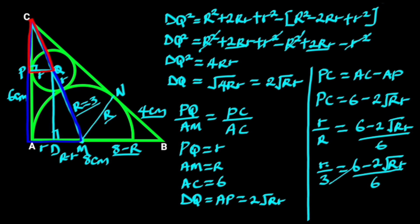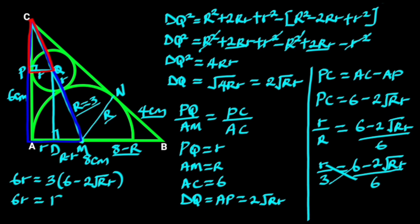Next, we cross multiply. Doing so gives us 6r equals 3 times (6 minus 2√(Rr)). Next, we expand the bracket by multiplying the terms with the 3 outside it. It follows that 6r equals 18 minus 6√(Rr).